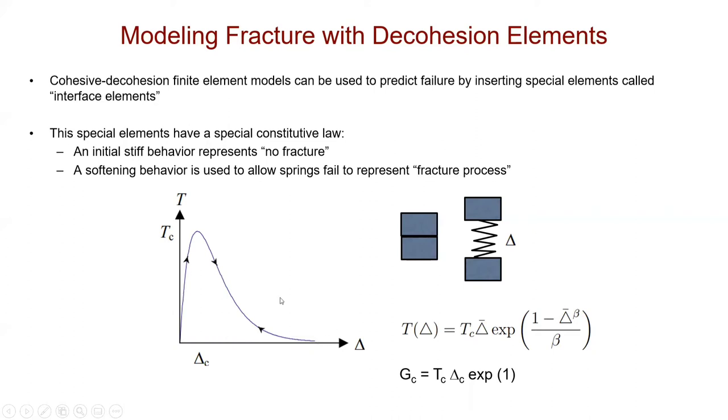This can be represented with this equation here. As delta, for example, when delta is one, you get the maximum value here. When delta is zero, you're going to see that the traction is zero. If you were to calculate the slope, you will see the slope has very high stiffness. These beta values, for example, can be chosen. If I chose to have it as one, then you will have different shapes of this curve.